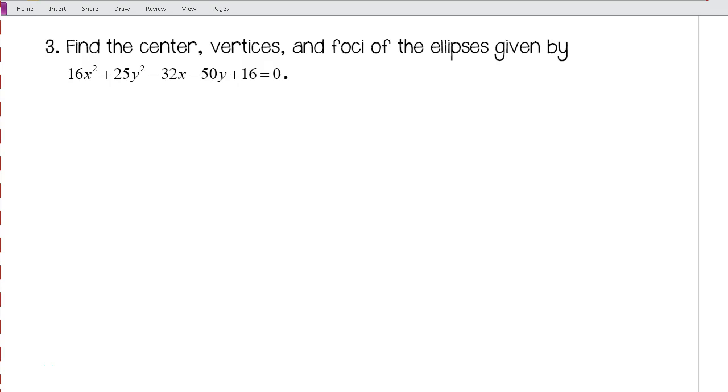For this one we want to find the center, vertices, and foci of the ellipse given by 16x² + 25y² - 32x - 50y + 16 = 0.